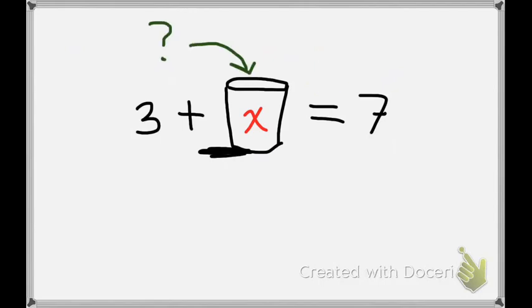Can you tell which number must be in the X bucket? If you were thinking 4, you're exactly right. So the solution to this equation is X equals 4.